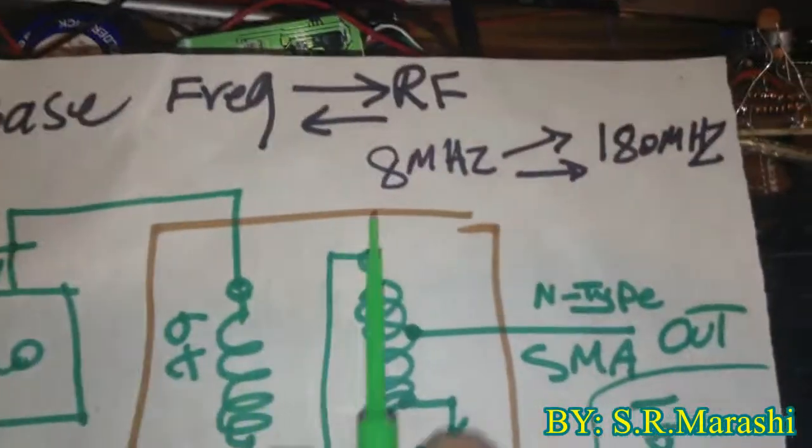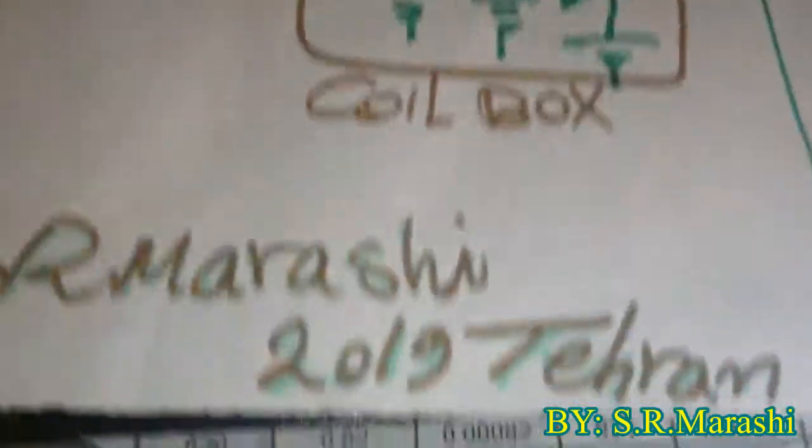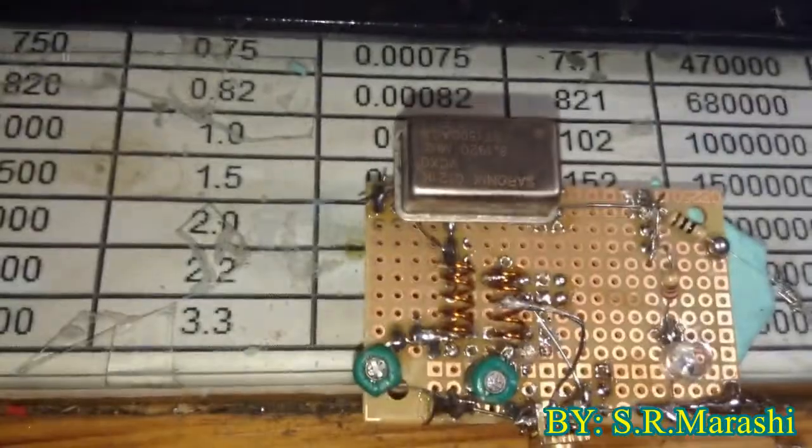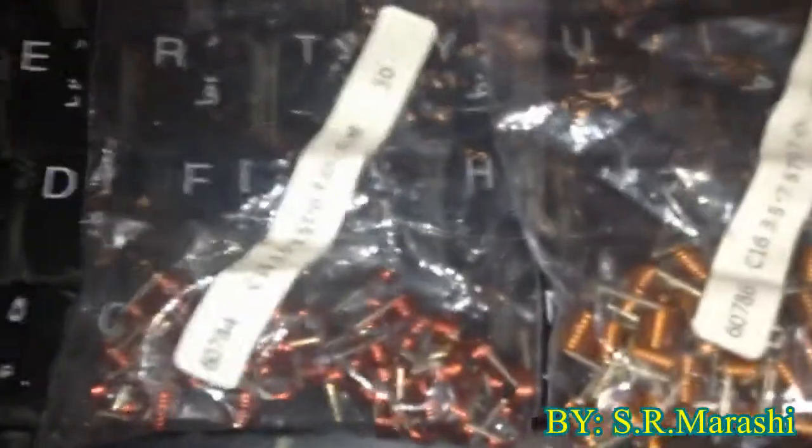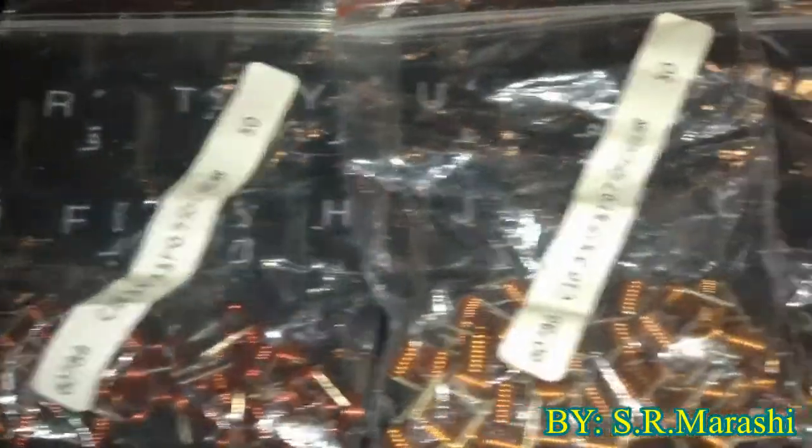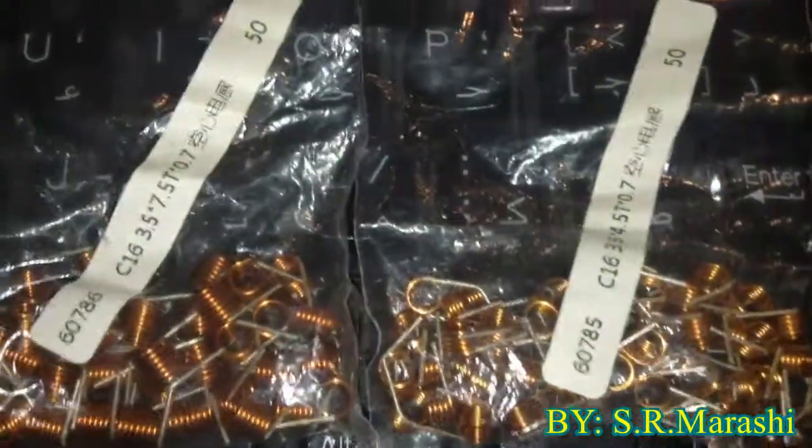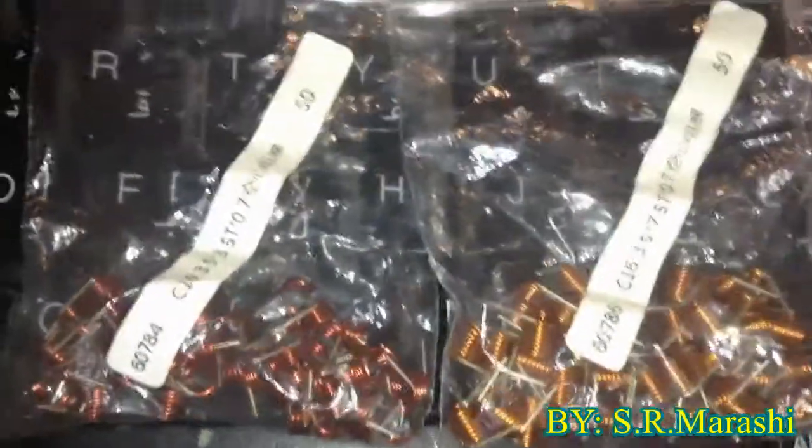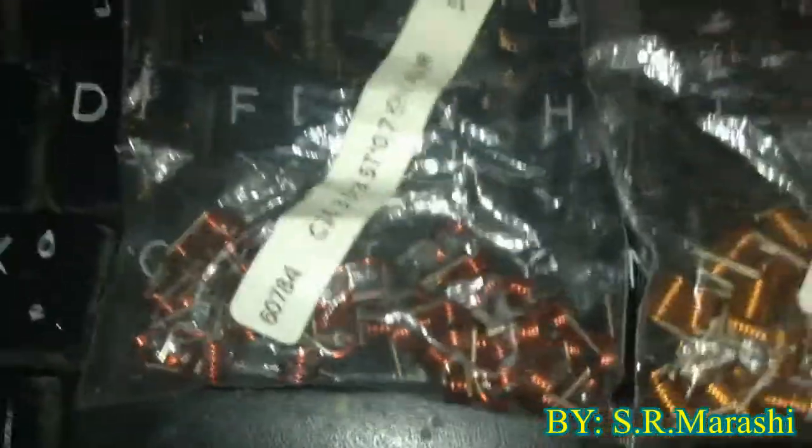I call this project RF frequency to RF, converting normal frequency to radio frequency - for example, 8 megahertz to 200 megahertz. For the coils, it's much better to get them from eBay. It's the best place to buy these coils.